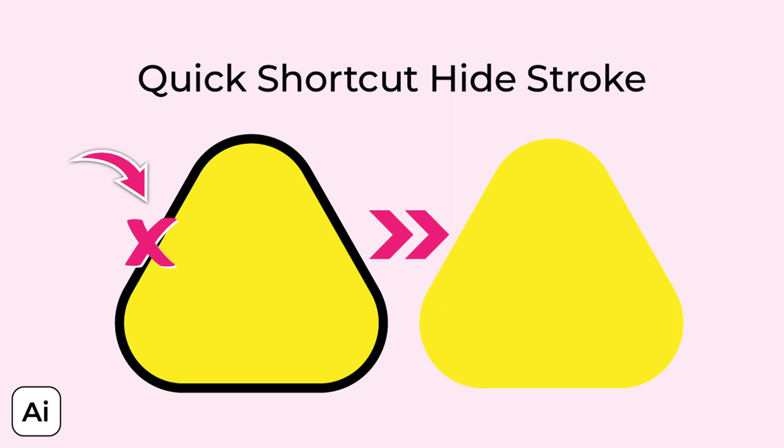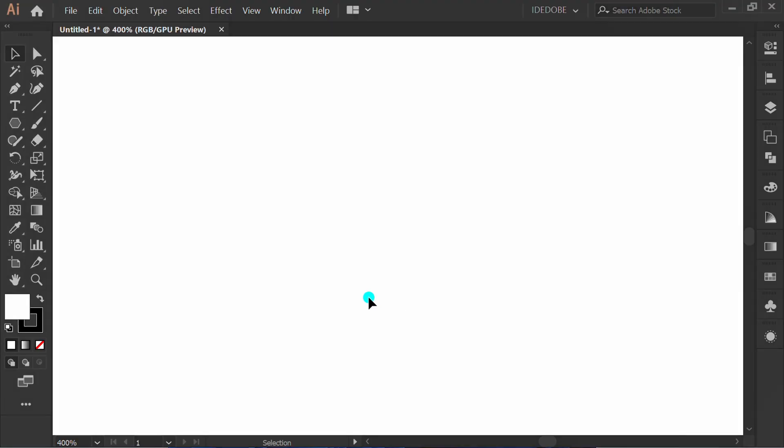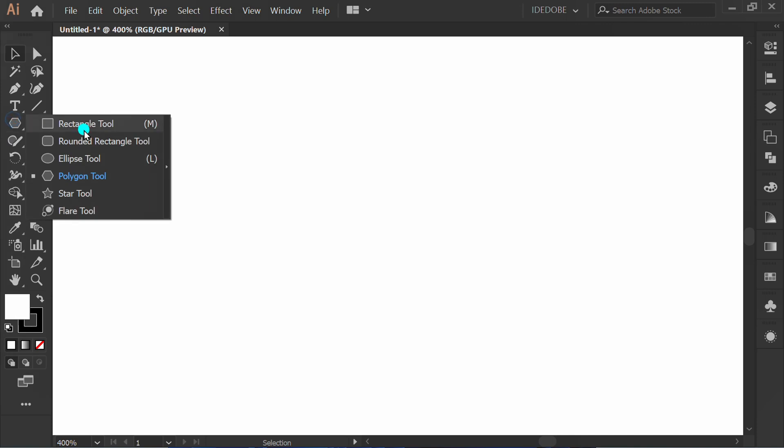Let's follow the steps on how to hide stroke using shortcuts. First, I will make a simple shape.